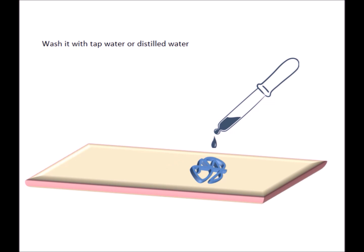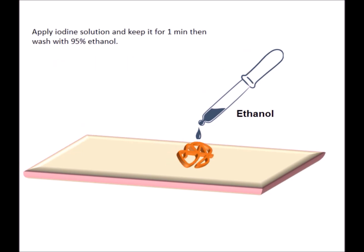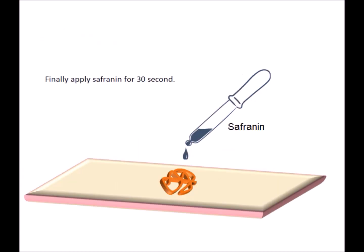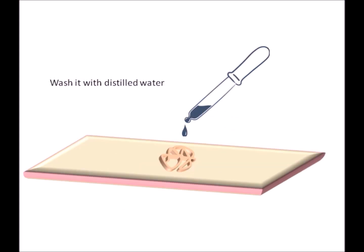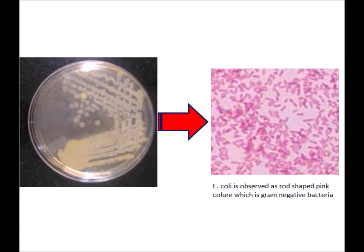Now apply the iodine solution and wash with 95% ethanol after 1 minute. When iodine molecules bind to crystal violet, they make the molecule bigger. Then wash once again with distilled water. Finally, apply counterstain safranine for 30 seconds, then wash with distilled water and observe under a microscope at 100x with immersion oil. We can observe Bacillus uriniensis as rod-shaped purple color, which is Gram-positive, and E. coli as rod-shaped pink color, which is Gram-negative.